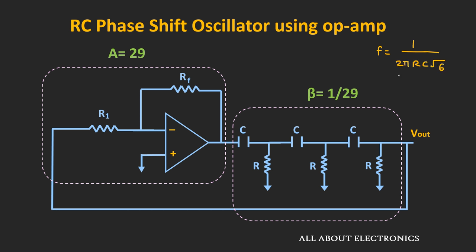If three stages are used, the oscillation frequency f is given by f = 1/(2πRC√6). At this frequency, the loop gain equals 1 and the overall phase shift equals zero. For n number of stages, the general expression is f = 1/(2πRC√(2n)). So for four RC stages, f = 1/(2πRC√8), and for three stages, f = 1/(2πRC√6).